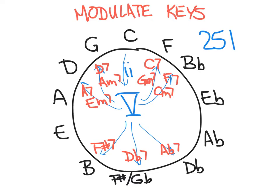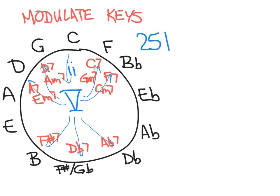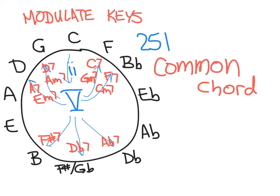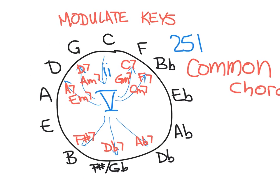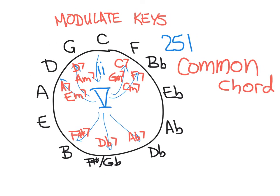All right, so far, all we've done is to identify what the 2 and the 5 are of the new key. How we get from C to another key, though, is to find a common chord. What would be common between the key of C and the next one?